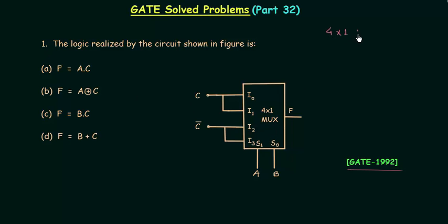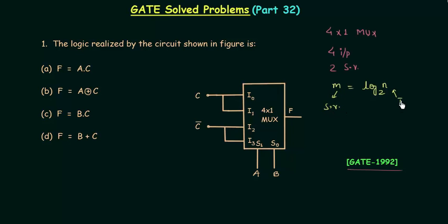In case of a 4-to-1 multiplexer there are total 4 input lines and 2 selector variables. You can easily calculate the number of selector variables by using the formula log base 2 of n, where n is the number of inputs. In this case there are 4 inputs so we have log base 2 of 4, which is equal to 2.